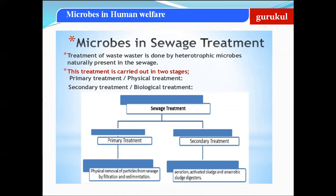Treatment of waste water is done by heterotrophic microbes naturally present in the sewage. Sewage treatment is carried out in two stages: primary treatment and secondary treatment. Primary treatment is also called physical treatment. It involves the removal of particles from the sewage by sequential filtration and sedimentation to remove floating debris, grit, soil, and small pebbles.